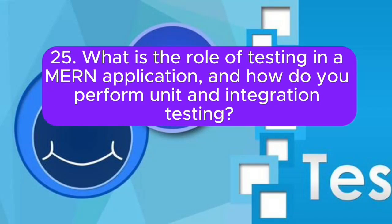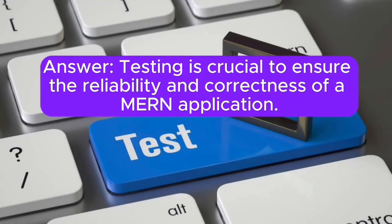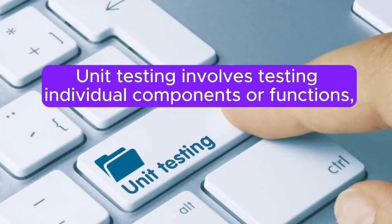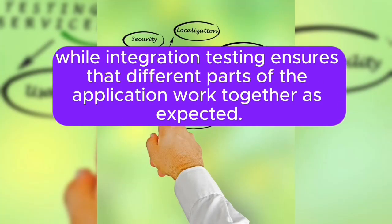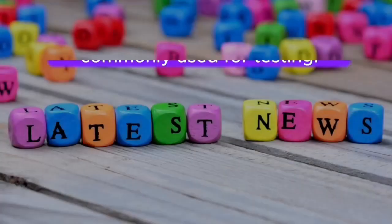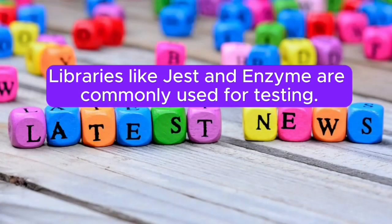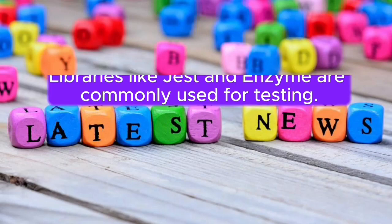25. What is the role of testing in a MERN application, and how do you perform unit and integration testing? Answer: Testing is crucial to ensure the reliability and correctness of a MERN application. Unit testing involves testing individual components or functions, while integration testing ensures that different parts of the application work together as expected. Libraries like Jest and Enzyme are commonly used for testing.